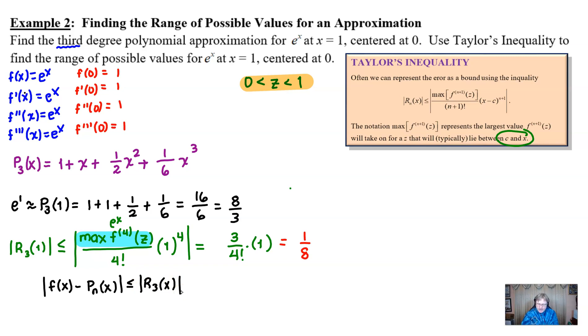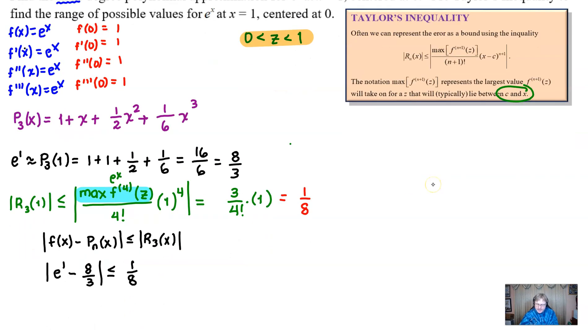Now, specific to this problem, x, of course, is one, our function is e to the x. So we would have the absolute value of e, I'll put to the first for emphasis, minus our approximation, which was done up here, the p sub three, n was three, again, our x was going to be a one, and we had eight thirds there. And that would be less than or equal to our one eighth that we have for our r sub three expression. And all you have to do is solve this compound inequality by saying opposite of one eighth is less than or equal to e minus eight thirds is less than or equal to positive one eighth.